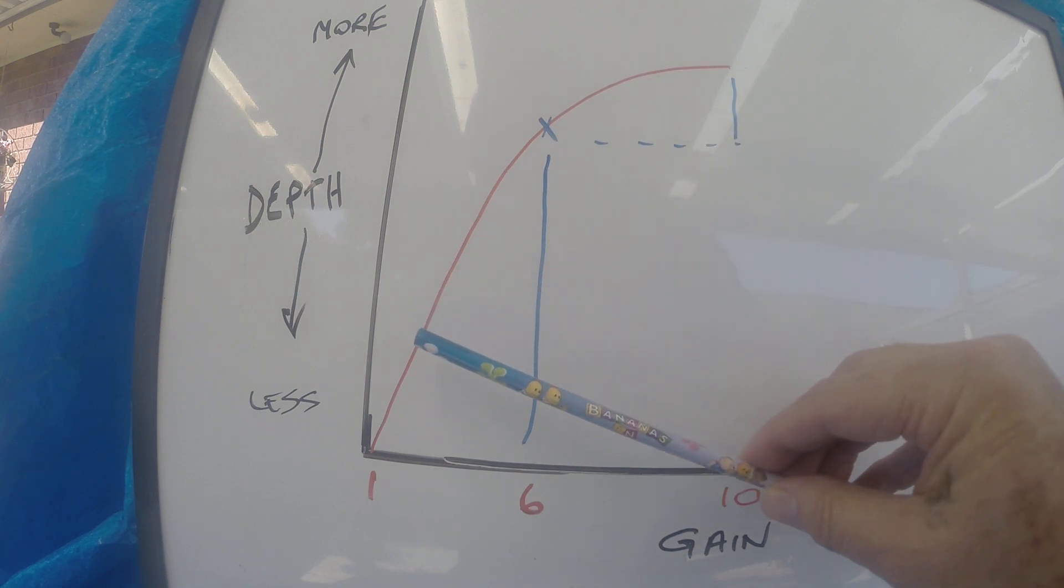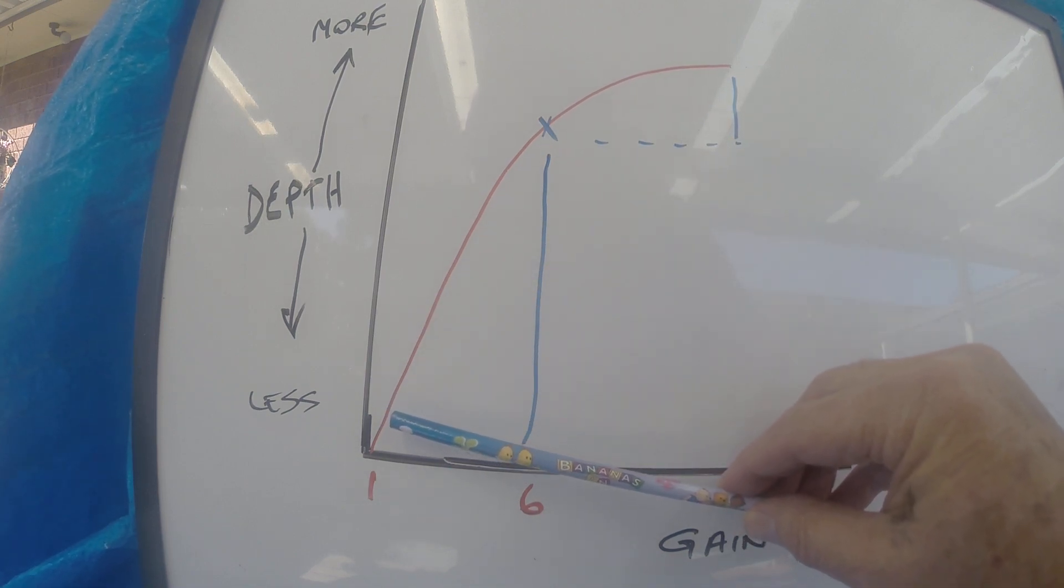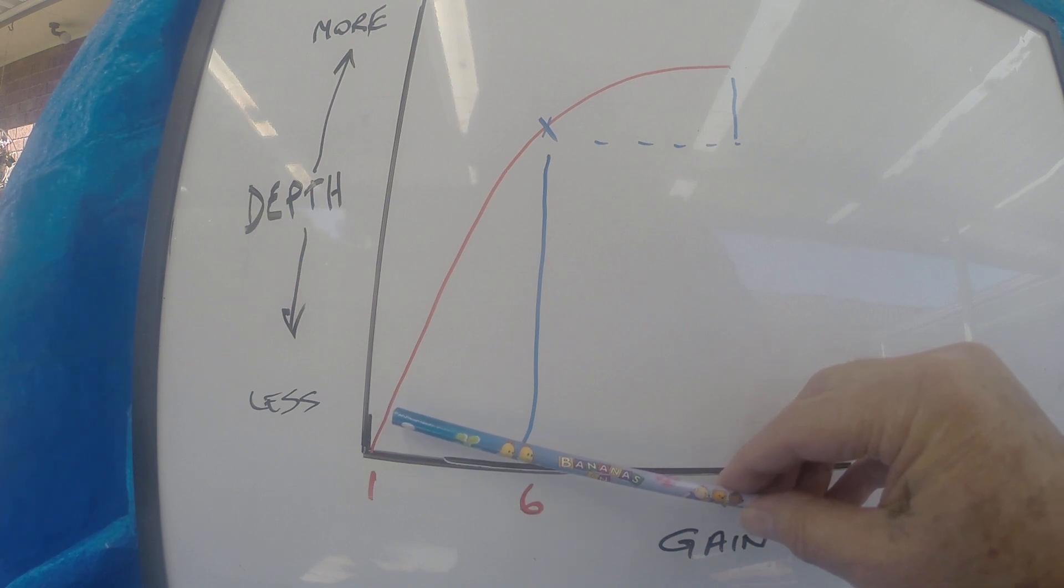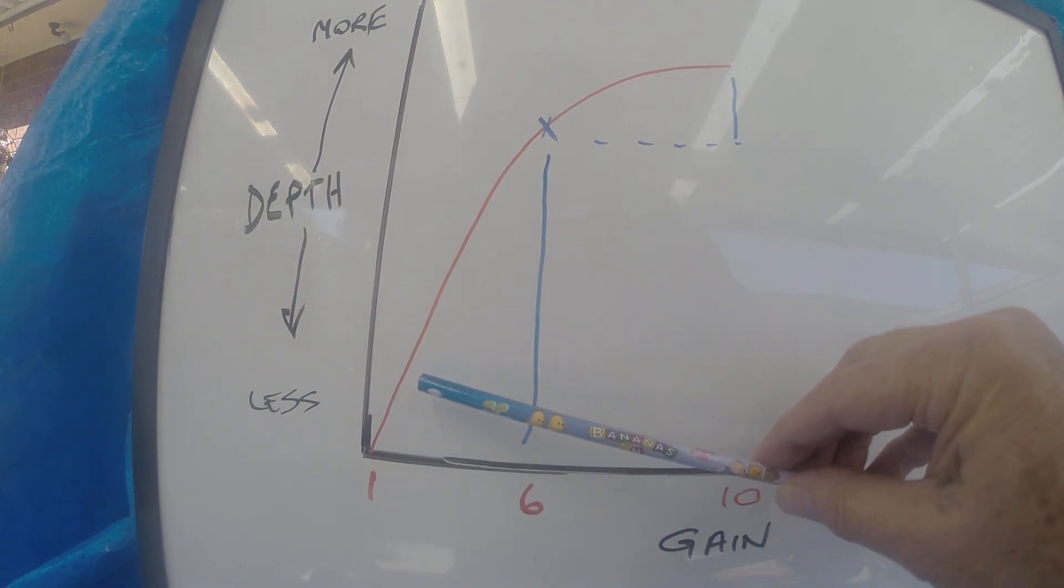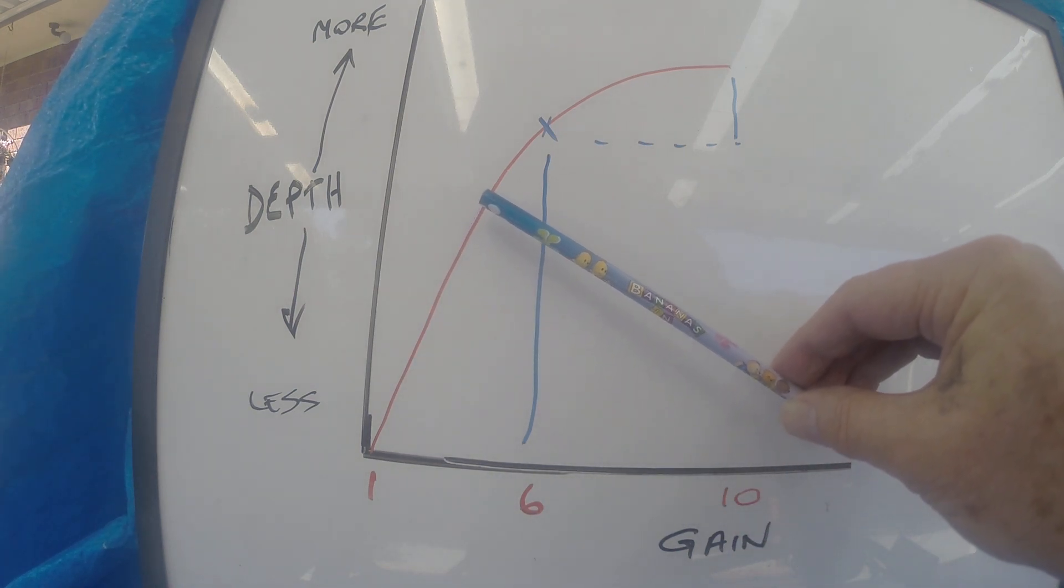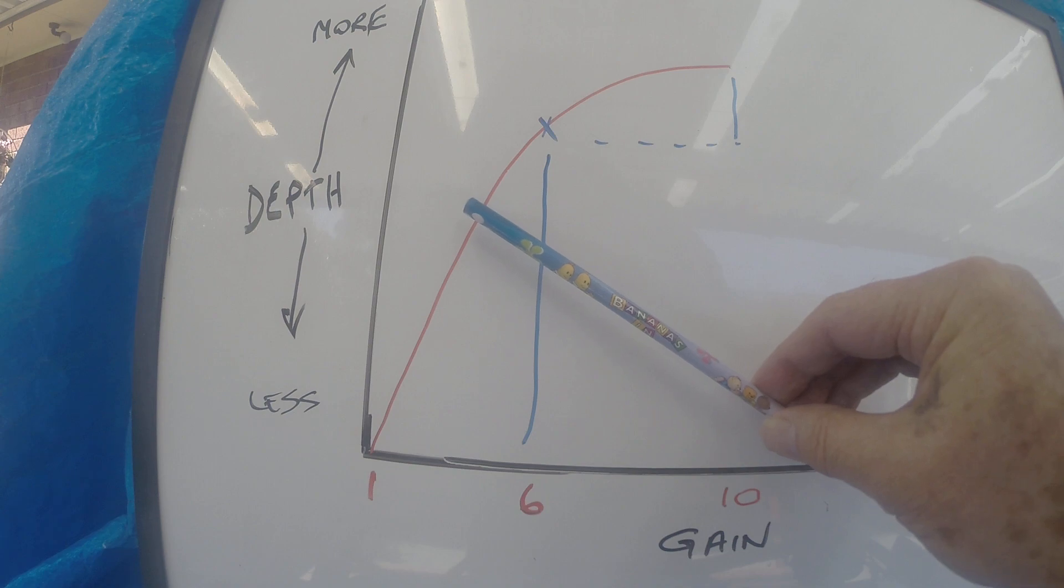Another way to do it is to leave it at 1 and do your ground balance and do your threshold B null and all that, carry on, and then start increasing your gain up to a point where you get the noise, then drop it off one.